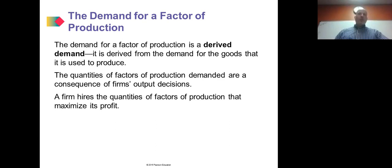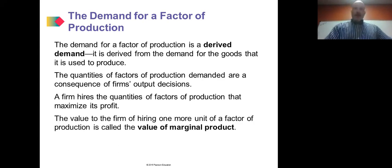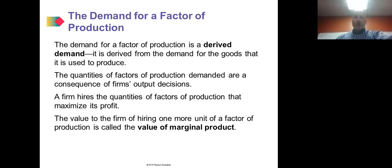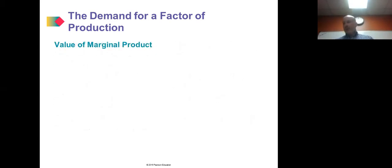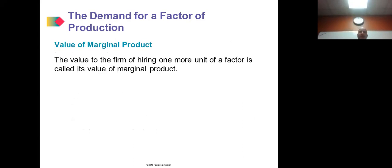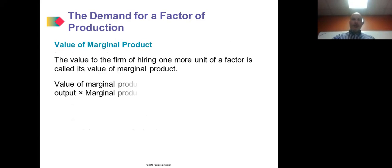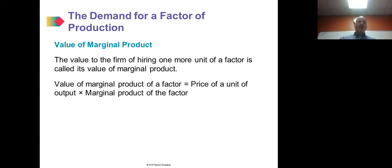A firm will hire the quantities of factors of production that maximize its profits. The value to the firm of hiring one more unit of a factor of production is called the value of marginal product. The value of marginal product equals the price of a unit of output multiplied by the marginal product of that factor.